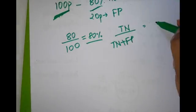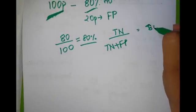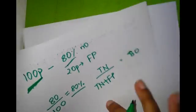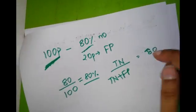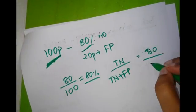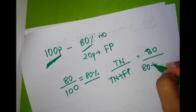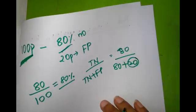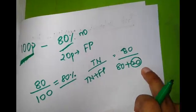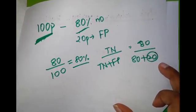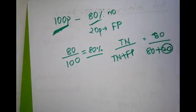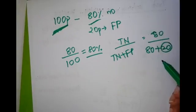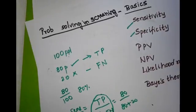Out of the total, 80 were truly negative and 20 were detected as false positive. If you try to increase the specificity, it will first try to reduce the false positives. This concept I hope is very clear.